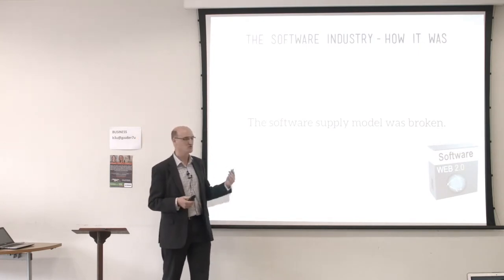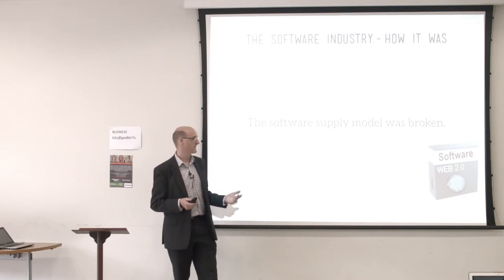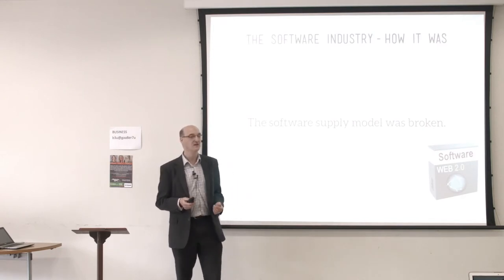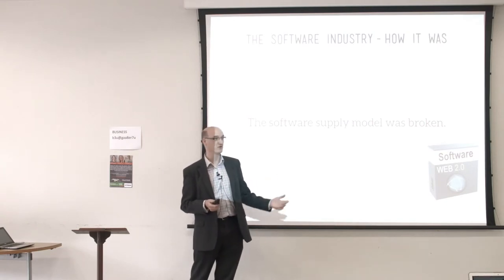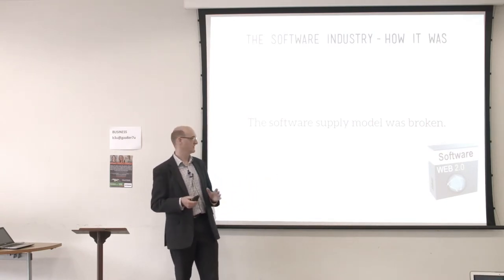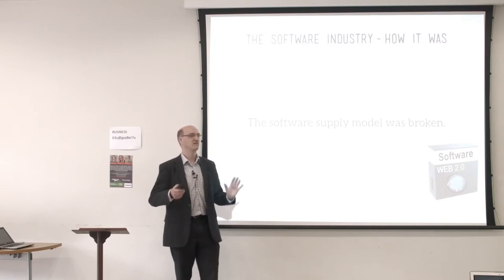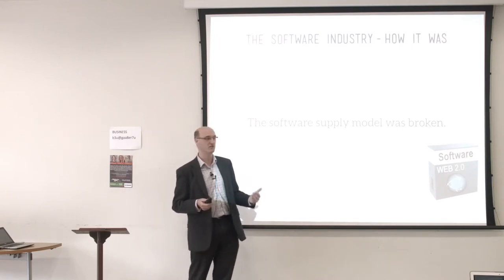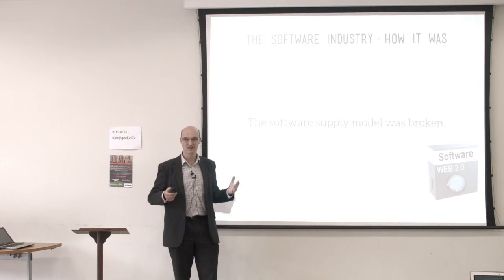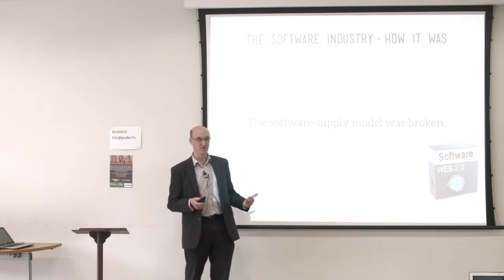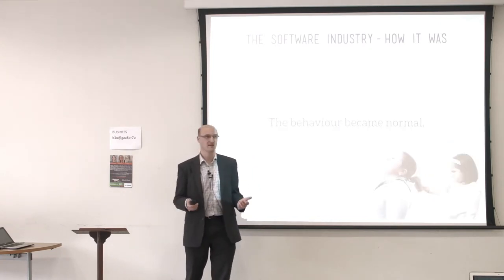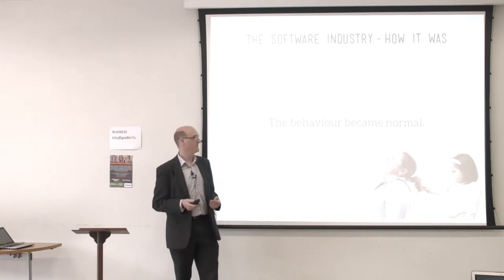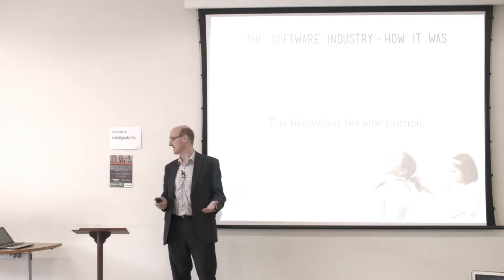There are lots of artificial constraints that have been designed into software to make people think this way. It's designed to stop you using it past a certain number of users, or a certain number of days, or a certain size. Constraints are designed around software. They're not limitations of software — they're limitations designed by companies who would like you to believe those limitations so you then have to buy more software. This behaviour became acceptable — it was the standard way of doing business for years.